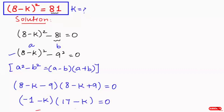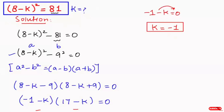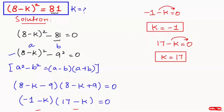Here we get two cases. Case one: minus 1 minus k equals 0. Taking the term to the right hand side, it turns positive, so we get k equals negative 1. The other case: 17 minus k equals 0. Taking this to the right hand side, k equals 17. So these are our k₁ and k₂.